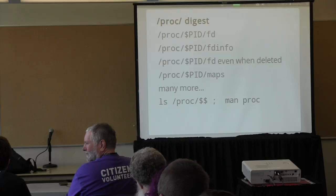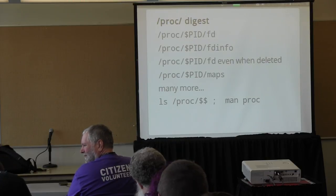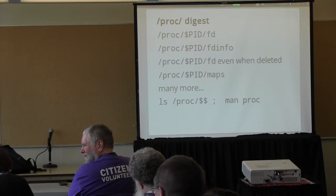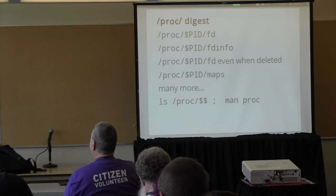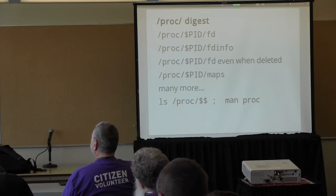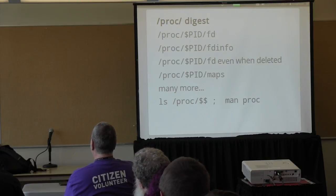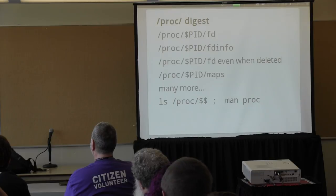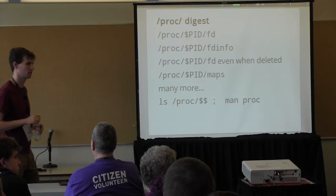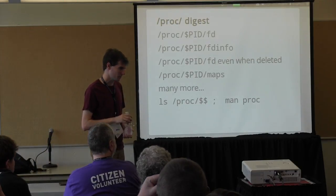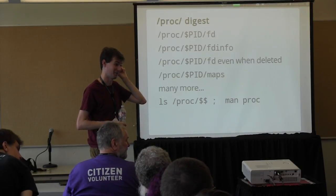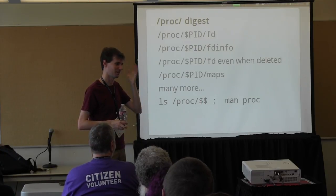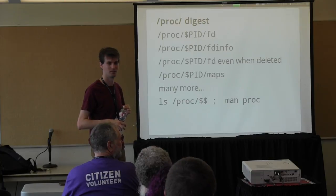Another question: if there's some process running on your system you'd like to know more about — you don't even know how it started, so you can't just strace it from the beginning — is there some way to get the equivalent strace output? Well, we'll get to strace in a moment, and you can actually strace an already running process, which is very handy. Regarding BSD: I believe BSD has something called a proc filesystem, and there's linproc — a port of the Linux proc filesystem.